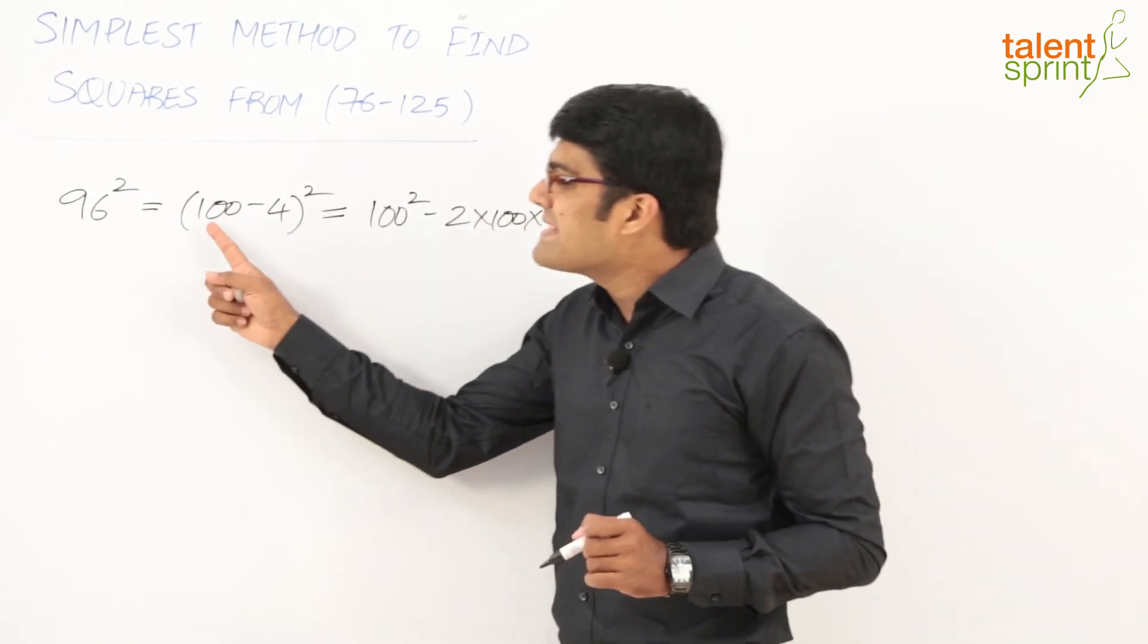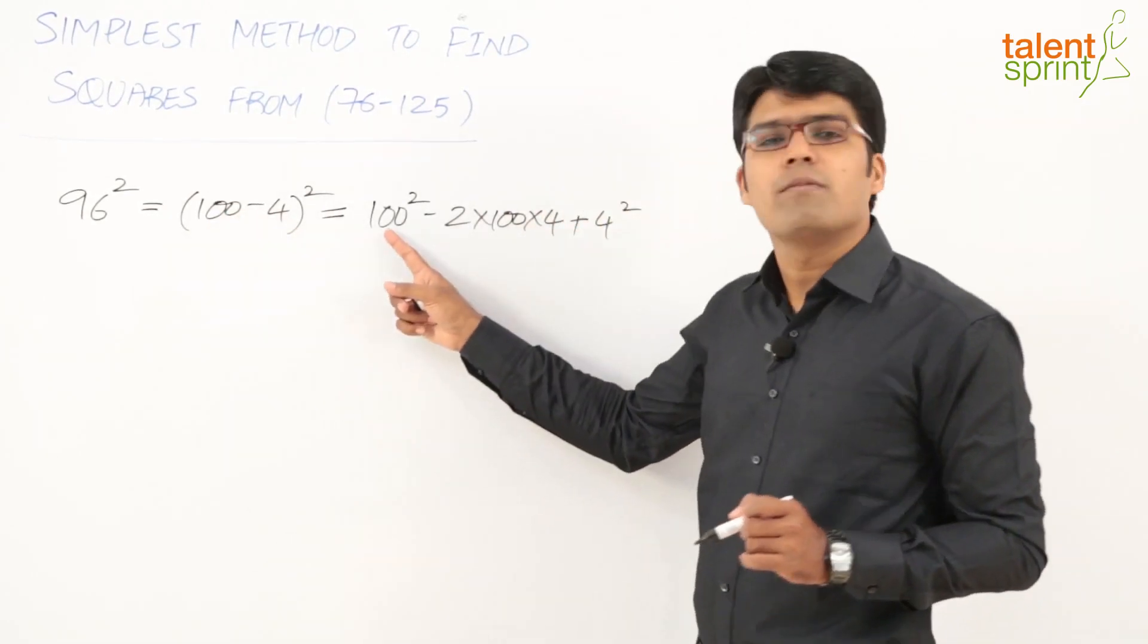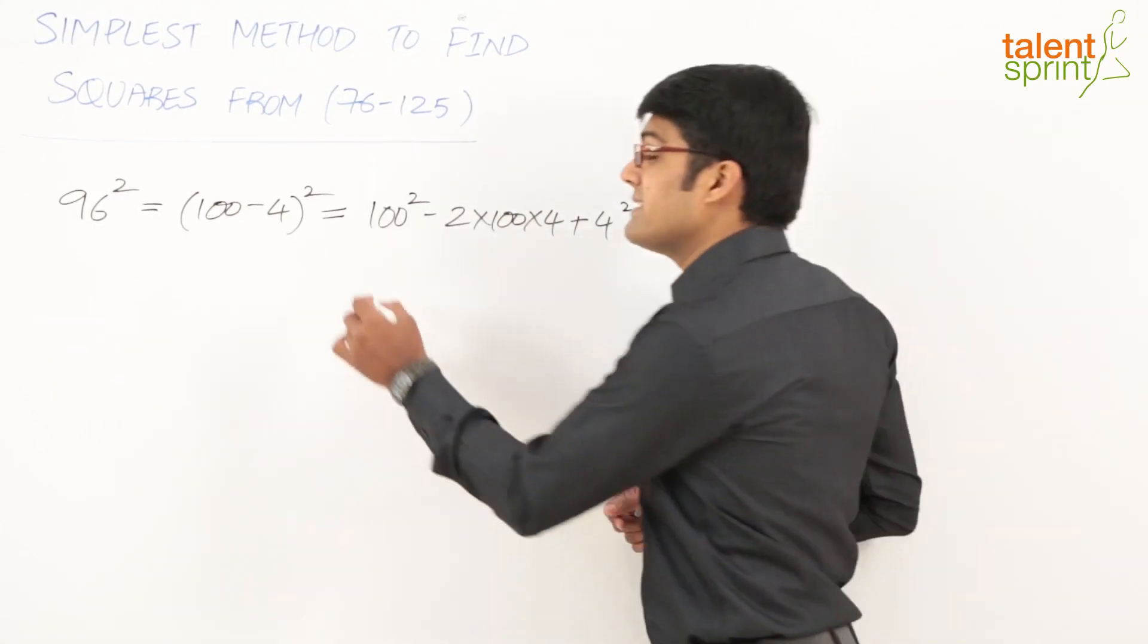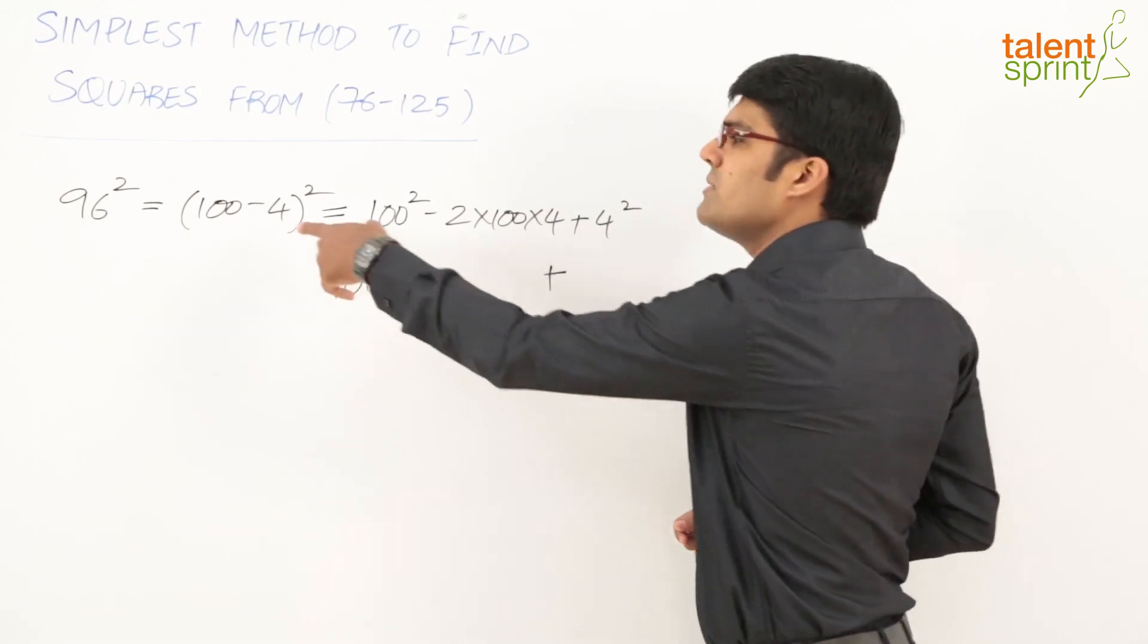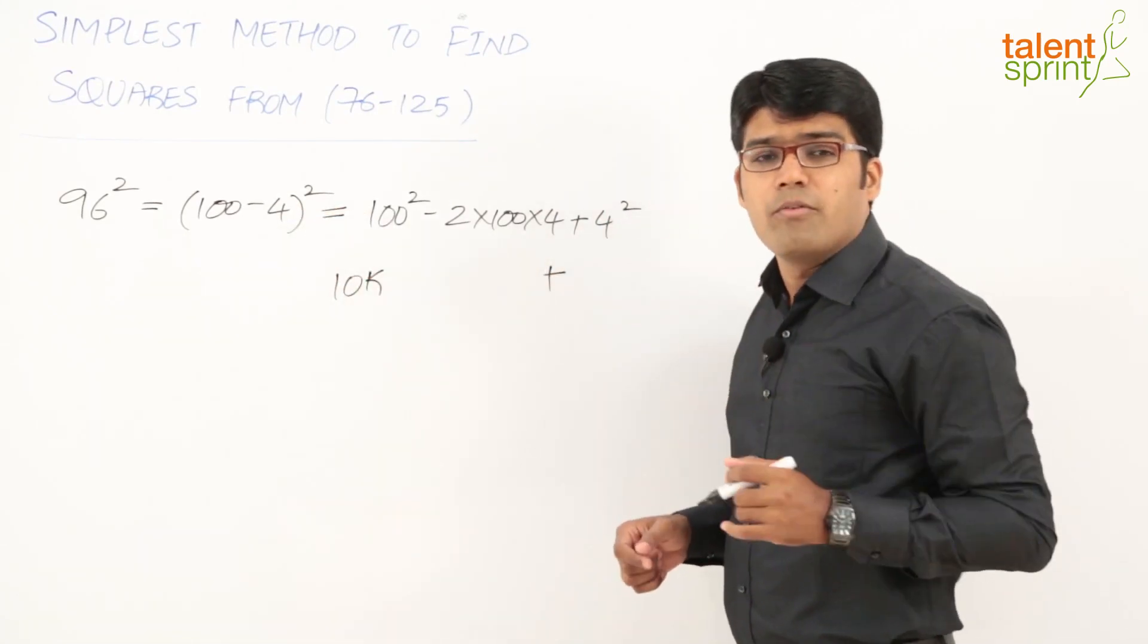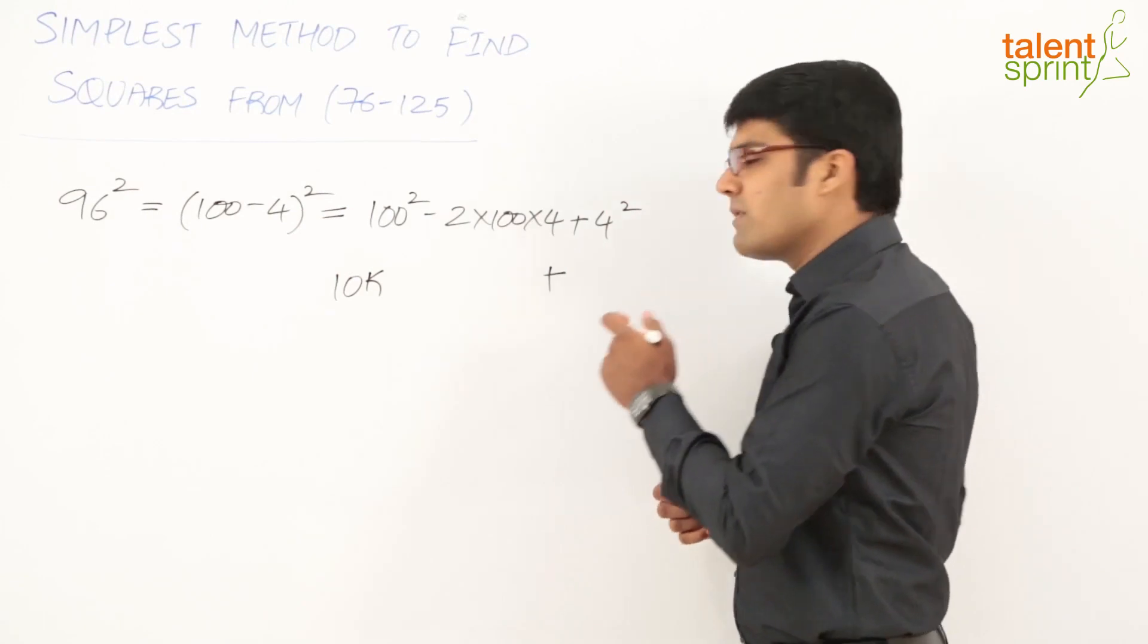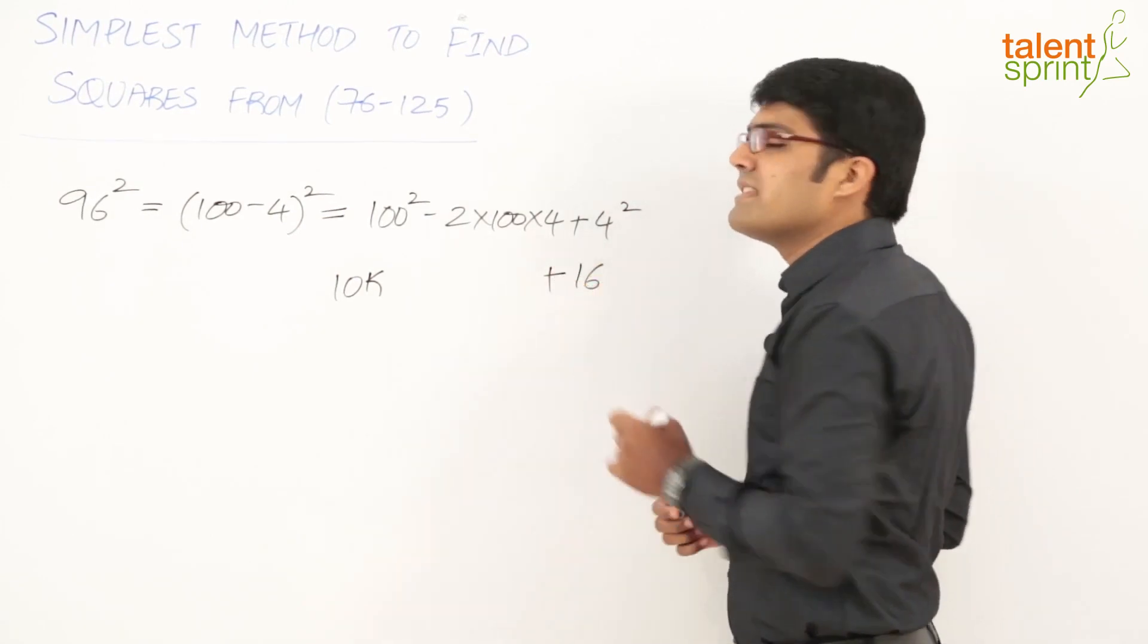Now, since our base is fixed at 100, the first term is always fixed: 100² = 10,000. The last term, the third term here, is going to be b², which is 16 in this case, like in the previous video where we looked at 26 to 75.